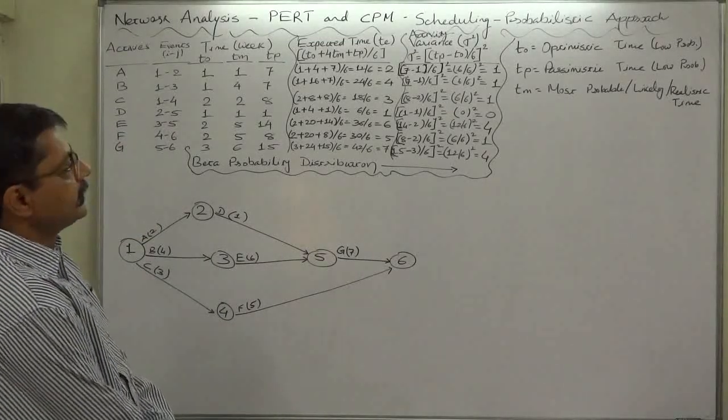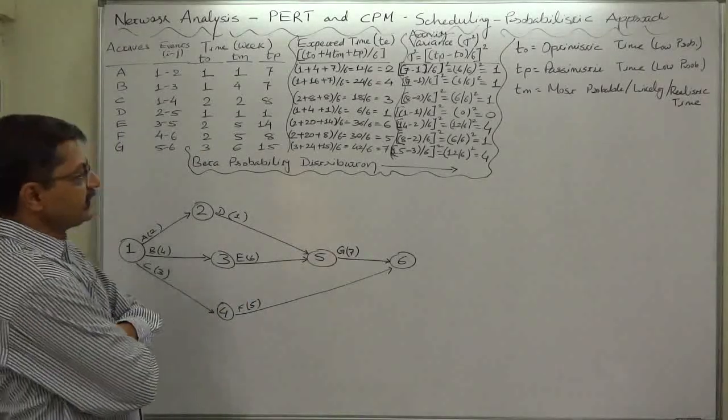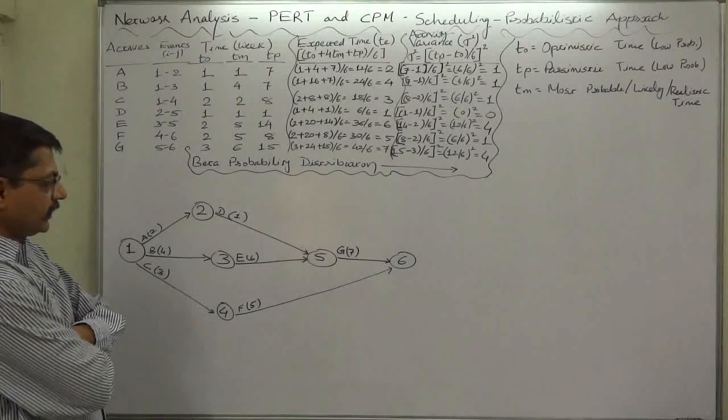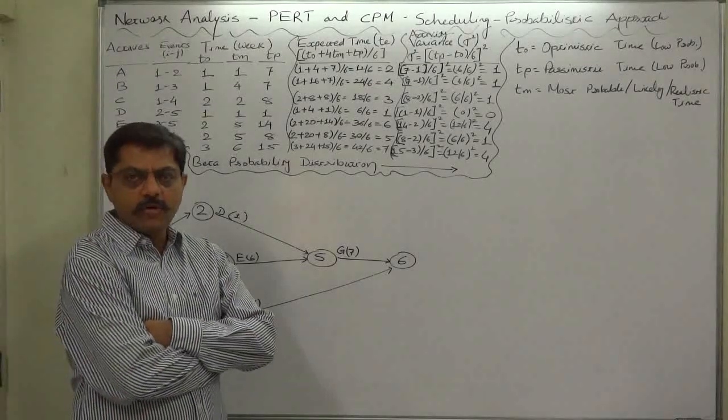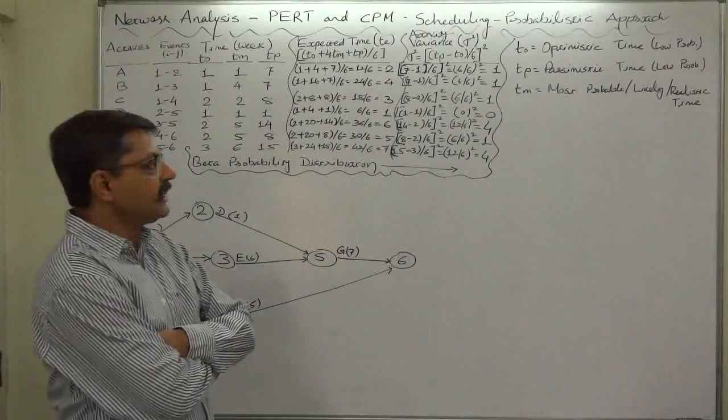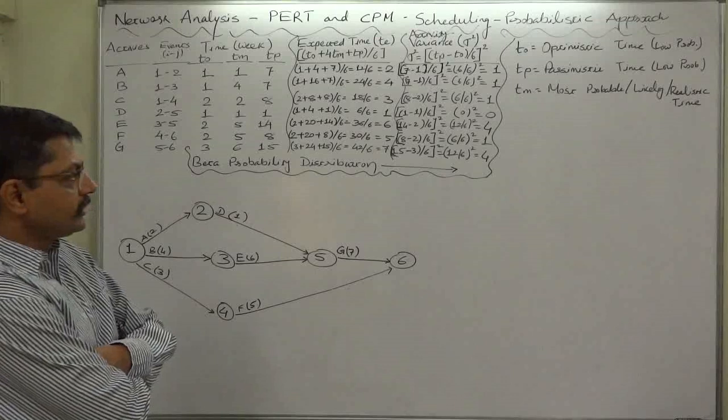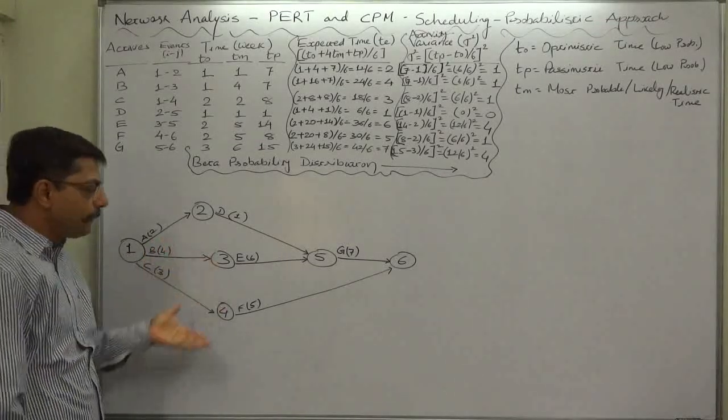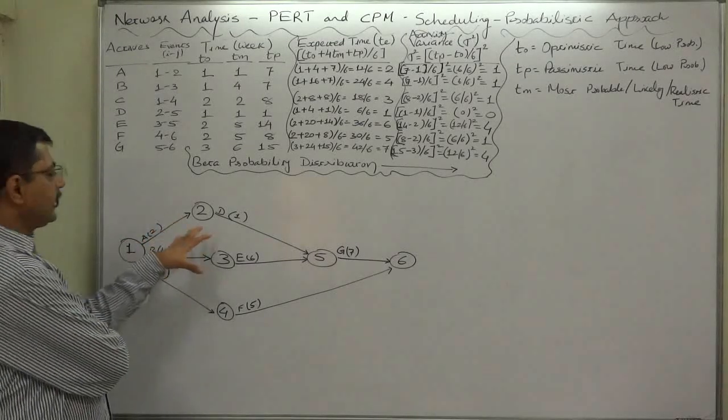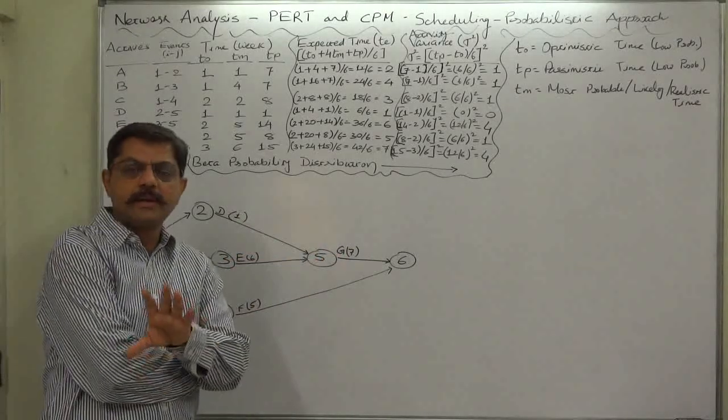Now first of all, let's determine the critical path because for all the further calculations we need to recognize the critical activities. We have more than one method available to determine the critical path. We are going to follow the simplest method because this is a very simple network diagram, and hence we are not going to write anything further like earliest start time, earliest finish time, latest start time, latest finish time, or anything.